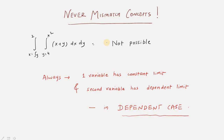Never mismatch the concepts. Suppose you have x from √y to 2 and y from 4 to x². Here x limits have variable y and y limits have variable x — this is not possible. Such integrals cannot be solved. The rule is: one variable must always have constant limits; the other can have a variable limit (dependent case), or both are constant (independent case). Always one variable has a constant limit.